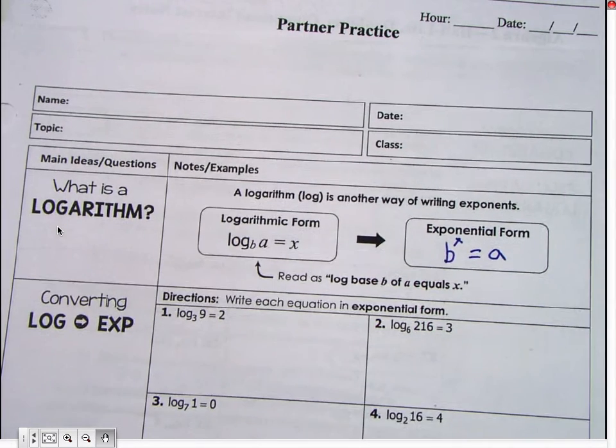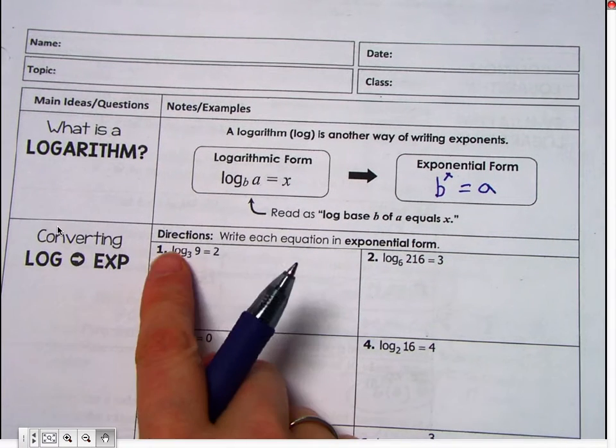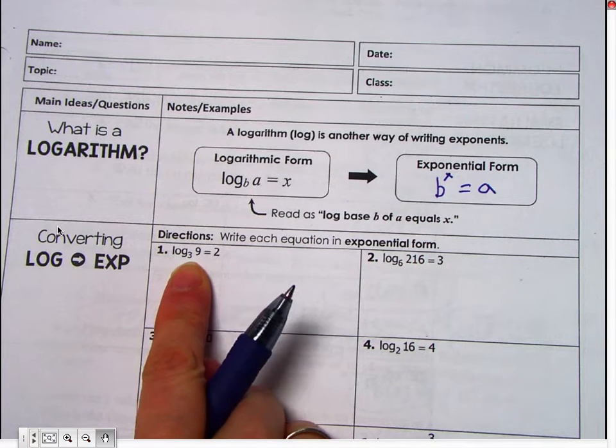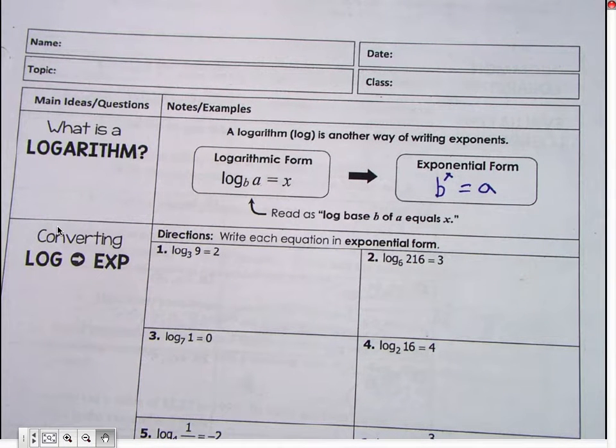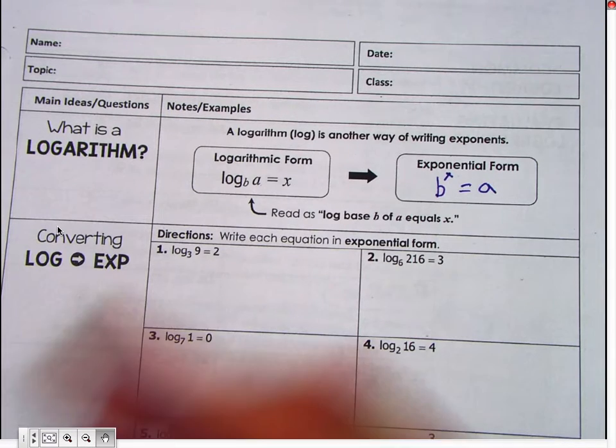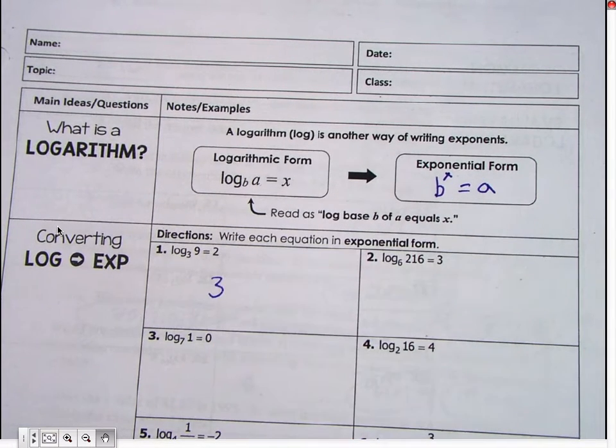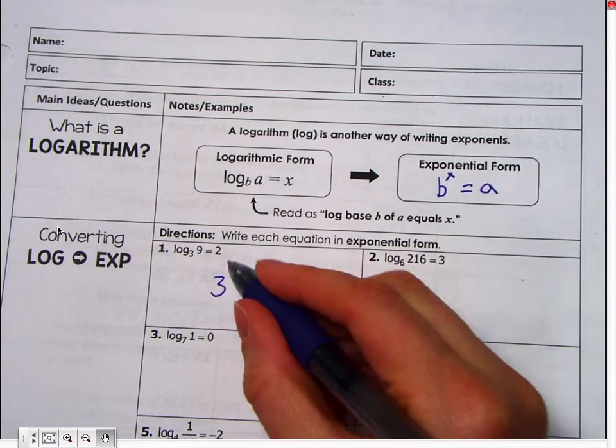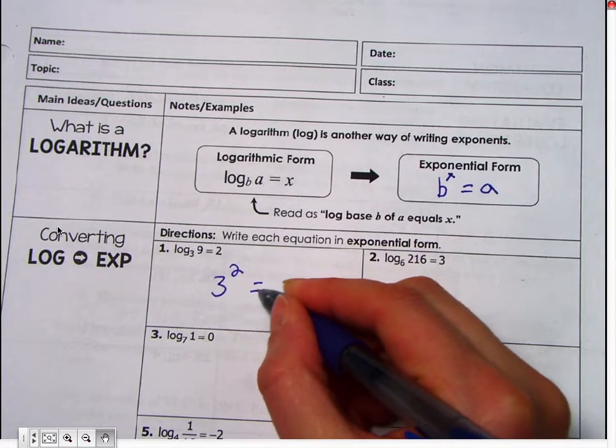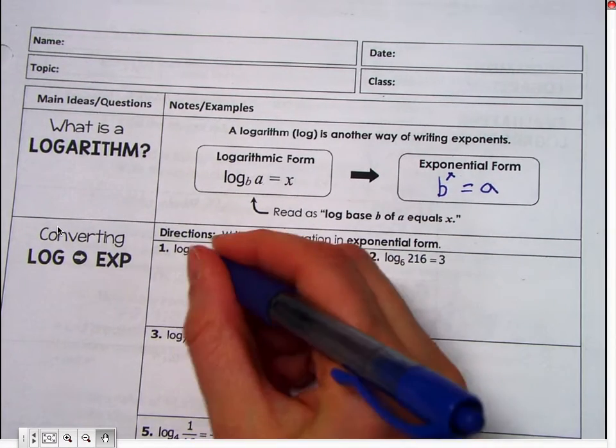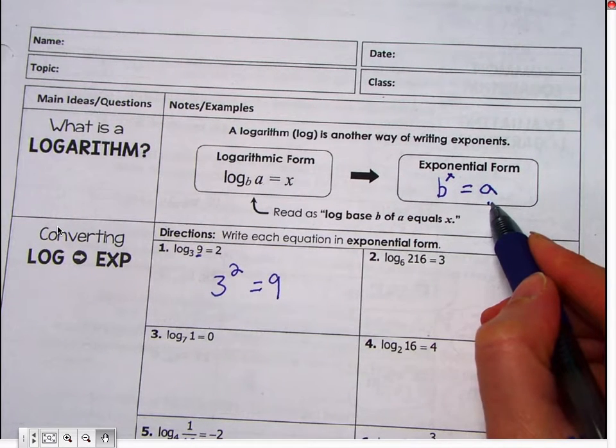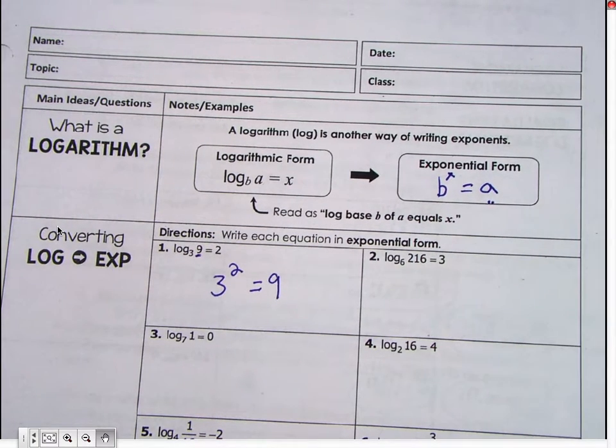I'm going to look at number one. So I have log base 3 of 9 equals 2. So this would be written, what's our B? What's our base that we're going to start with? 3. We're going to raise it to what? So look, 2. And that's going to equal 9. See how this right here is A and A is on the opposite side of our equal sign?